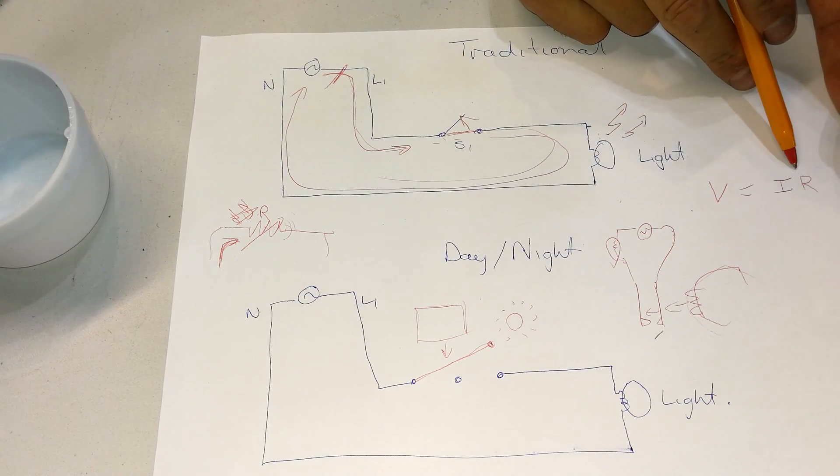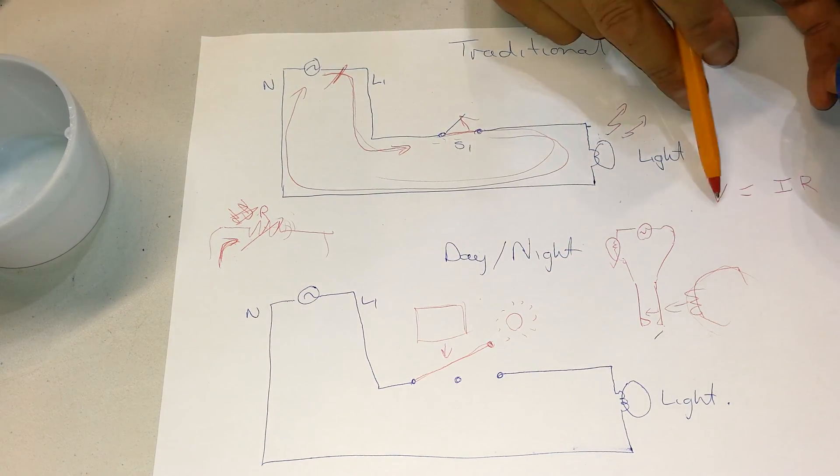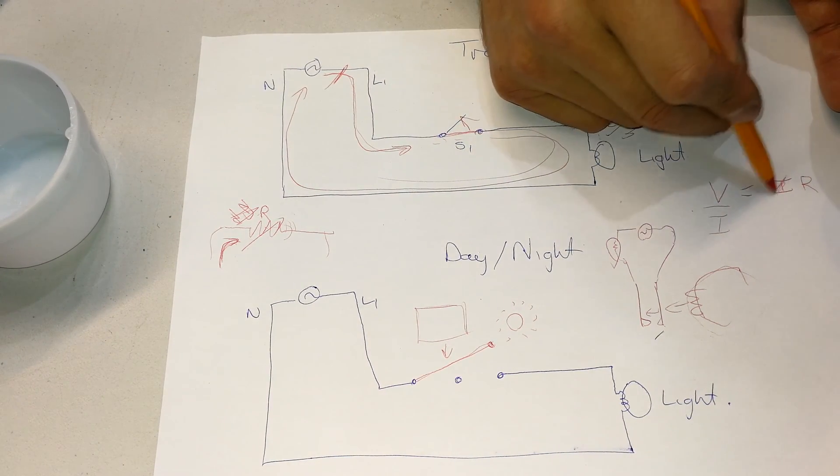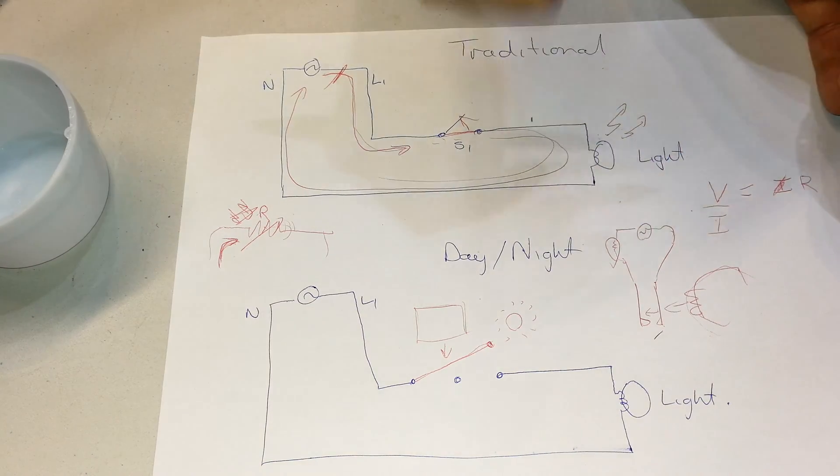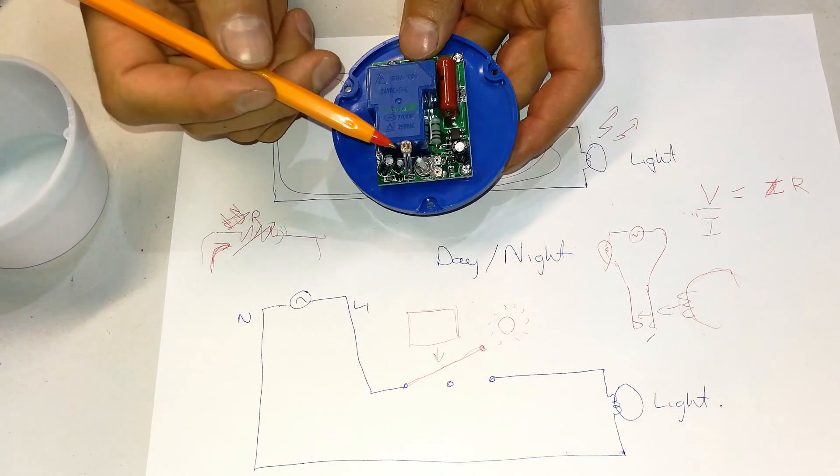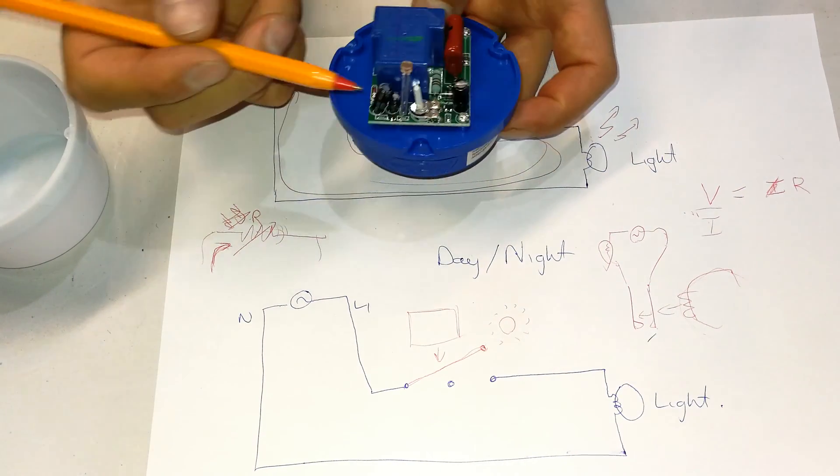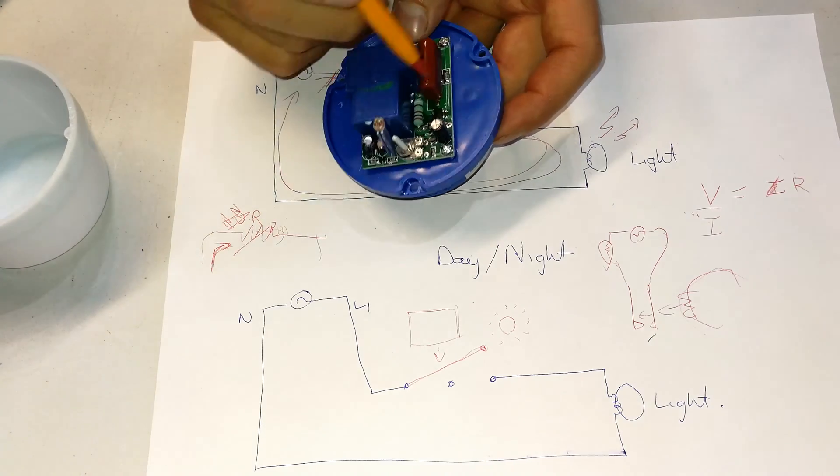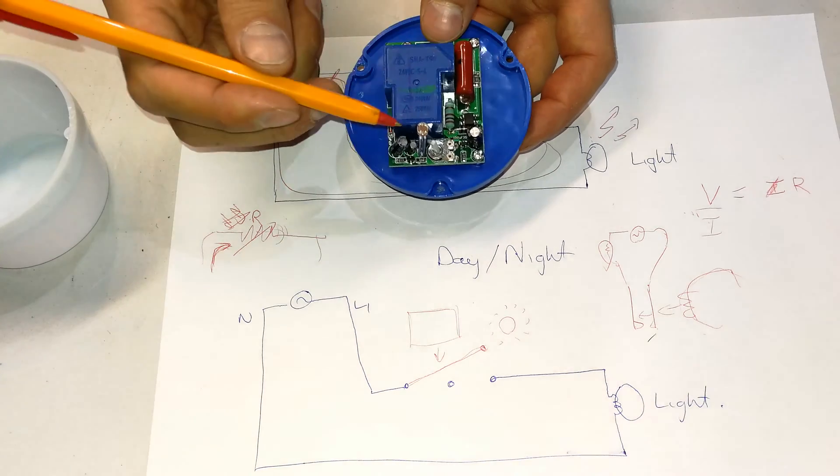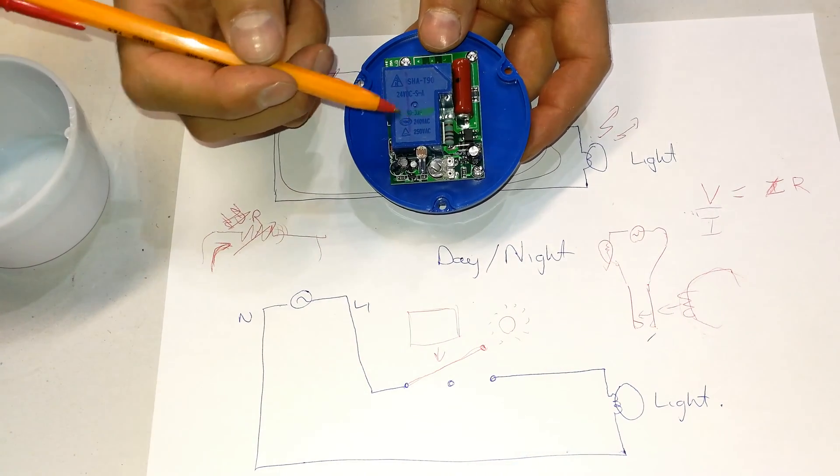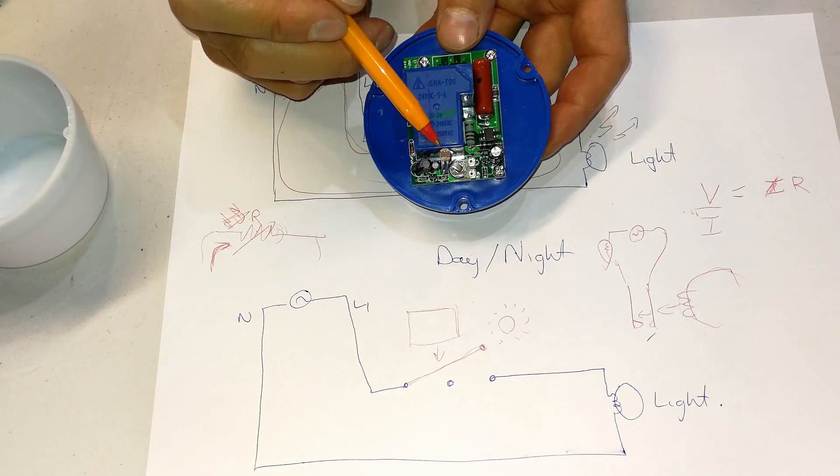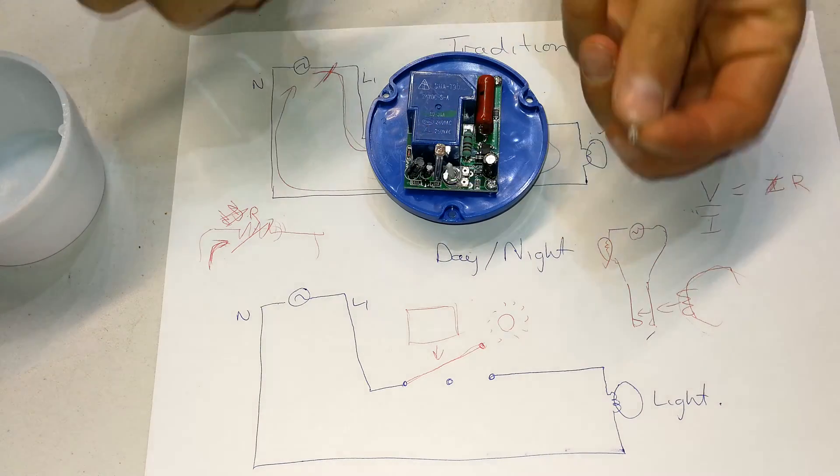V is equal to I times R. So resistance is inversely proportional to current. Because if I put current there, you will see that R is inversely proportional to the current. So as we increase the resistance, we'll decrease the current. So what happens is by changing the current, we can use a transistor of some sort, some switching device here. There's a looks like a transistor over there, surface mount. Then what happens is it activates the relay, so it is light dependent.